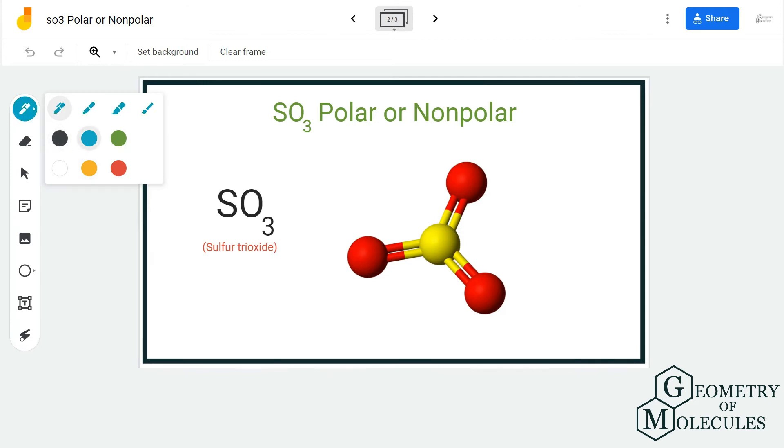When you look at this molecule in 3D, you can see that these atoms are arranged symmetrically with the same bond angle of 120 degrees. So as all these atoms are arranged in a symmetric pattern, there will be no net dipole moment in this molecule.